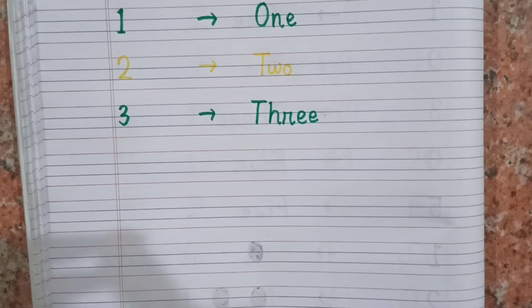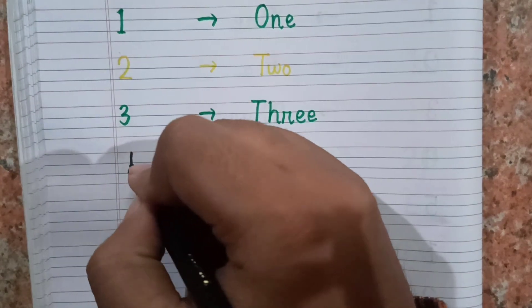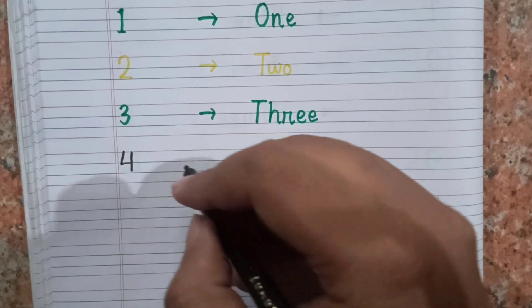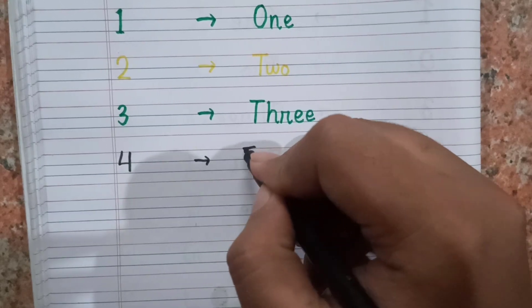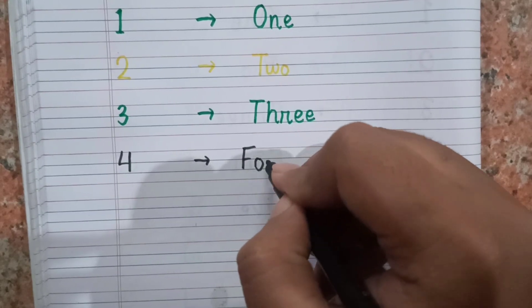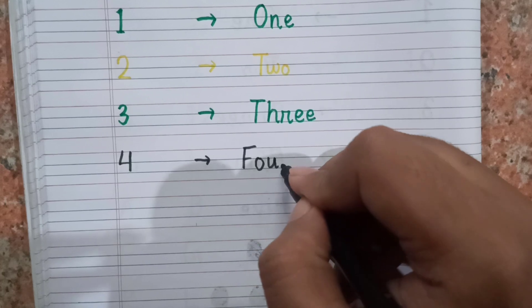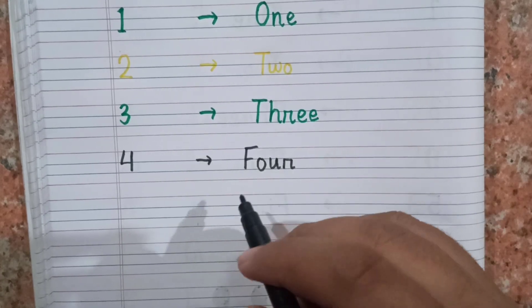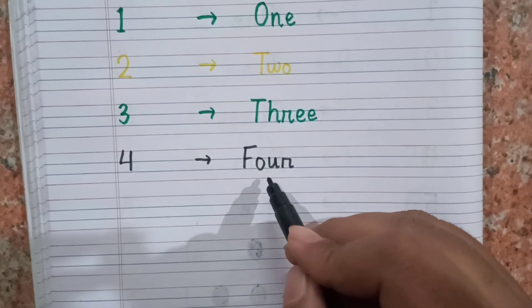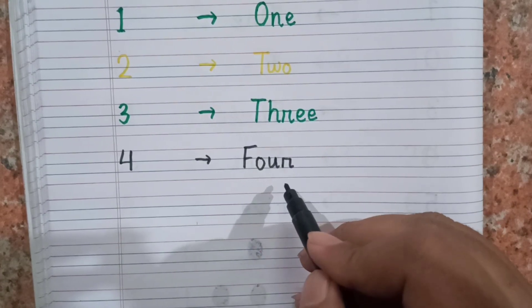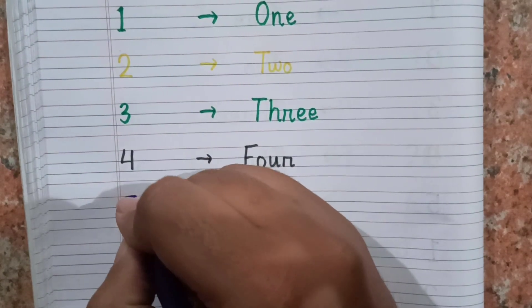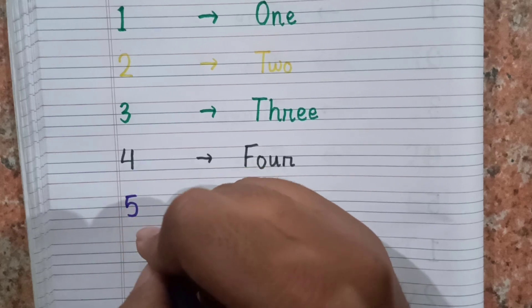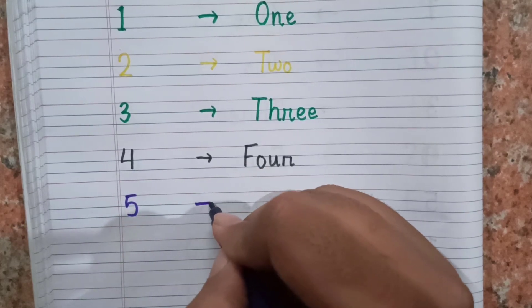After three, the next number is four. Now I'm writing four. This is four, and the spelling of four is F O U R. Four. After four, the next number is five. This is five, and the spelling of five.